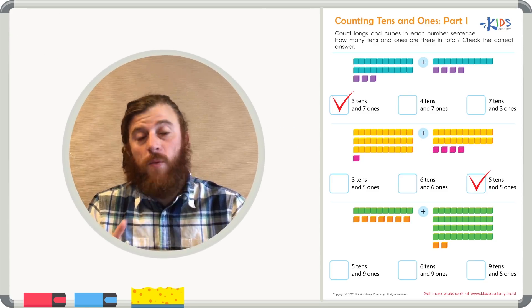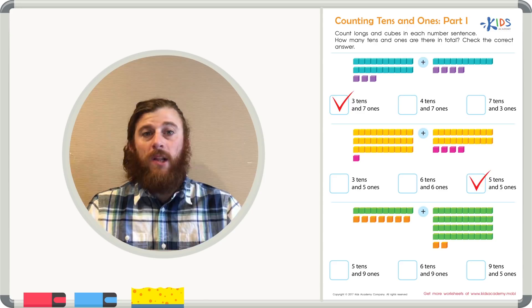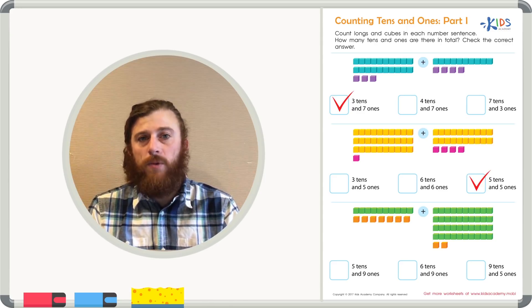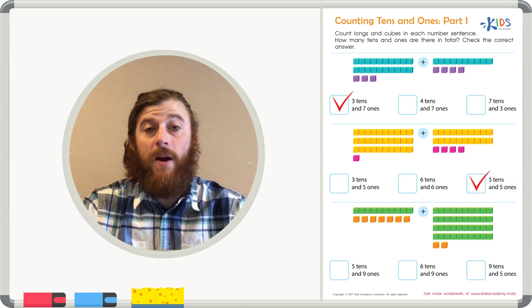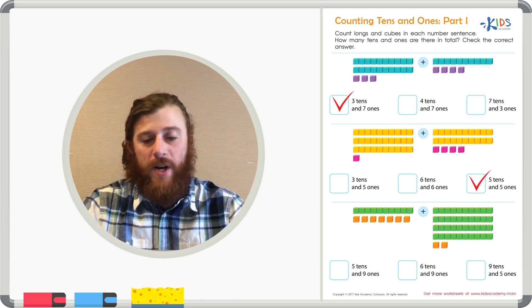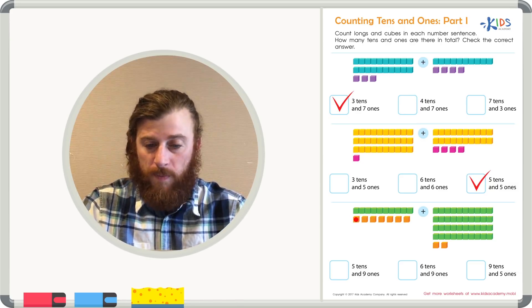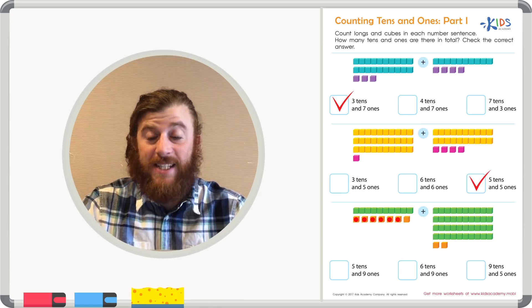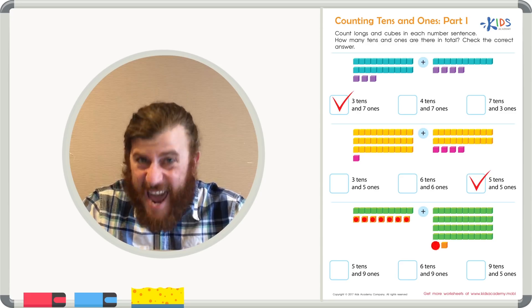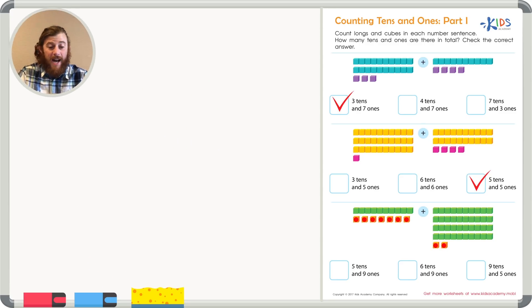In our final example, again, we're going to start by counting the ones. Let's count them all together, so that way we know what the total of ones are. Let's start by counting the cubes on the left side of the equation. We have one, two, three, four, five, six, seven, eight, nine. I count nine ones in total.